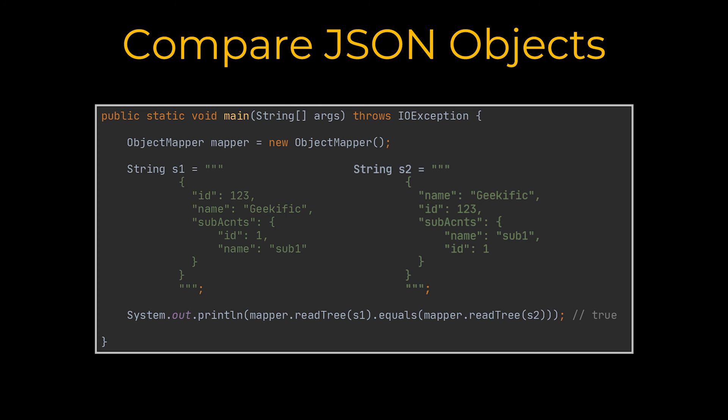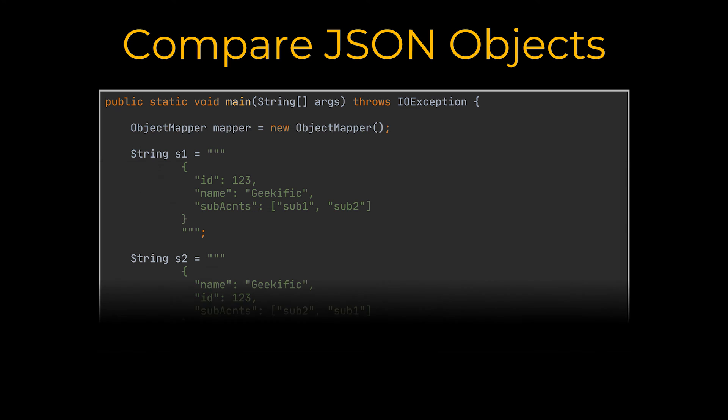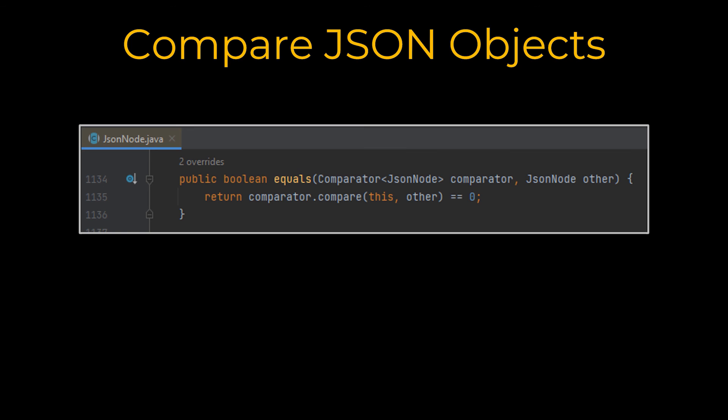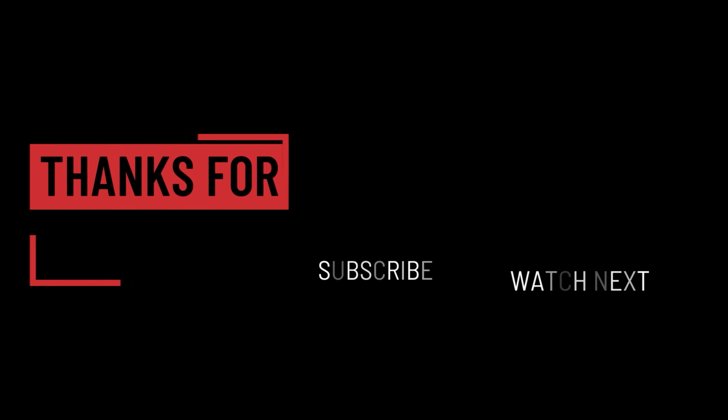Now if we add a list to both JSON objects and call the same methods to compare both strings, the return value is false — two list elements are only considered equal if they have the same values in the same exact order. The JsonNode object has an overloaded equals method that takes a comparator as a parameter, giving us the ability to pass in our own custom comparator. Using this overloaded method we can easily create a case-insensitive comparator, for example, or take care of the list ordering issue we just saw.